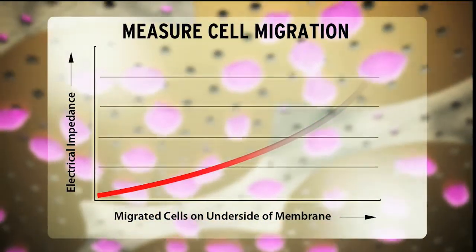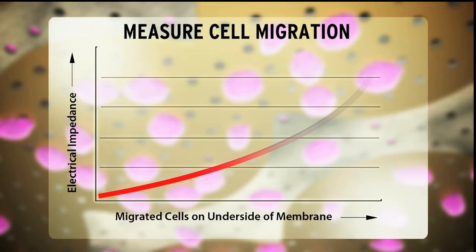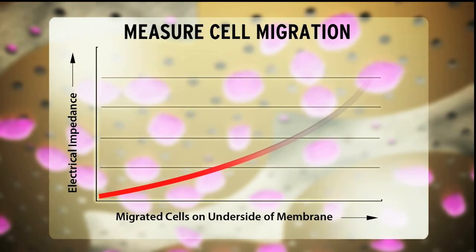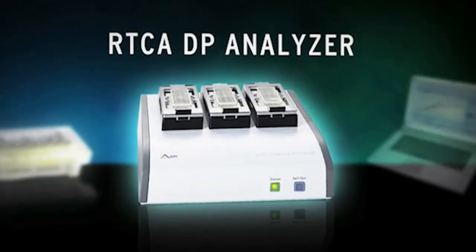An increase in impedance correlates with increasing numbers of migrated cells on the underside of the membrane. Cell index values reflecting changes in impedance are recorded by the RTCA DP analyzer.